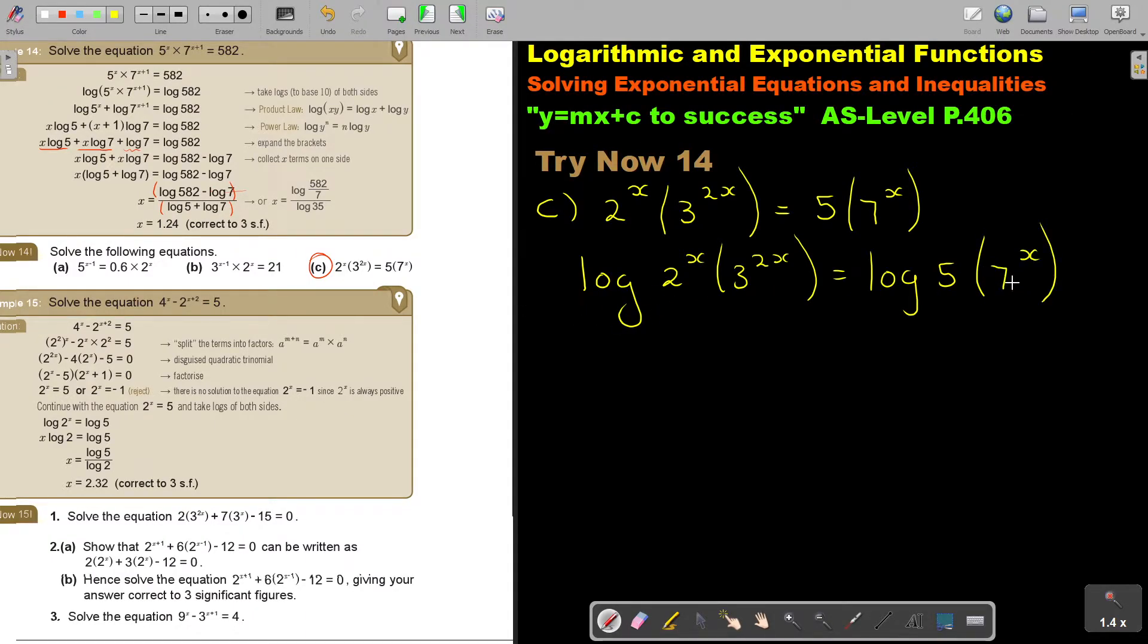Now I'm just going to say, so now it's going to be log 2 to the power of x plus, I'm using the product law, log 3 to x. The same here, log 5 plus log 7 to the power of x. And now I will use the power law to bring all that exponents down. So, it's x log 2 plus 2x log 3 equals log 5 plus x log 7.